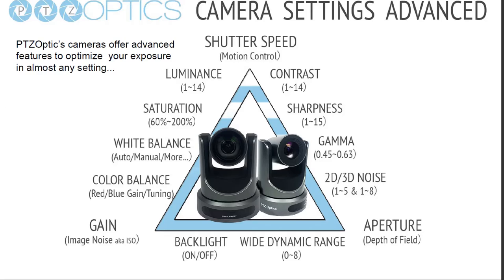Saturation has to do with color — you can desaturate the image so it's very black and white, or boost the saturation if needed. A lot of people boost saturation a little bit to make the colors pop. White balance is very important, and doing an auto white balance is one of the most important things to get the camera tuned to your room. You also have color balancing — if you have extra green, red, or blue in your room you can compensate using the color balances.